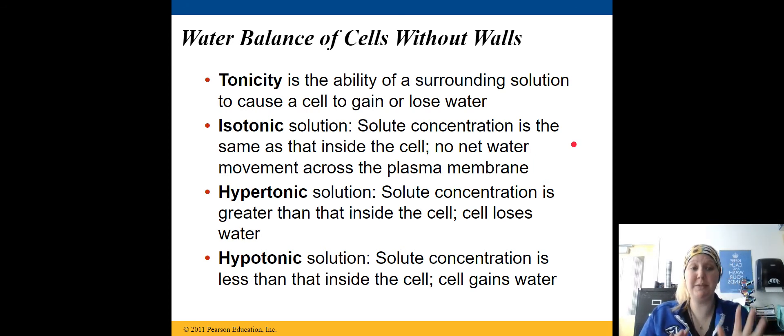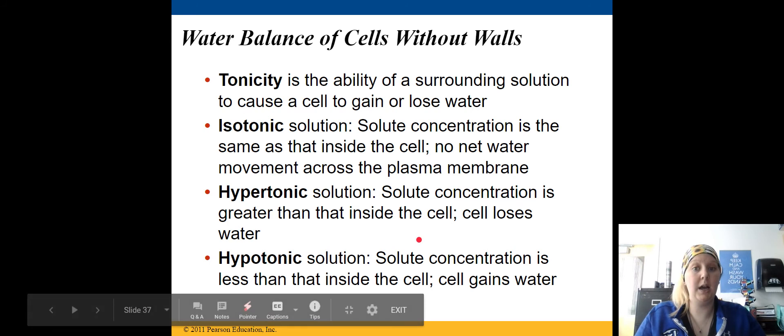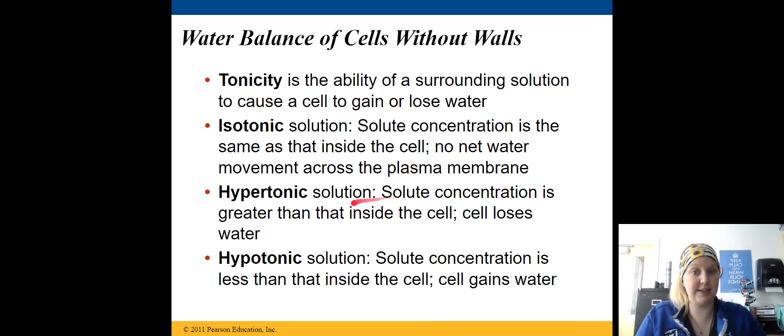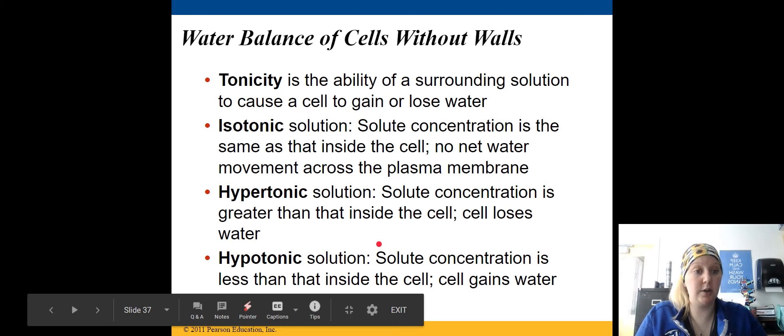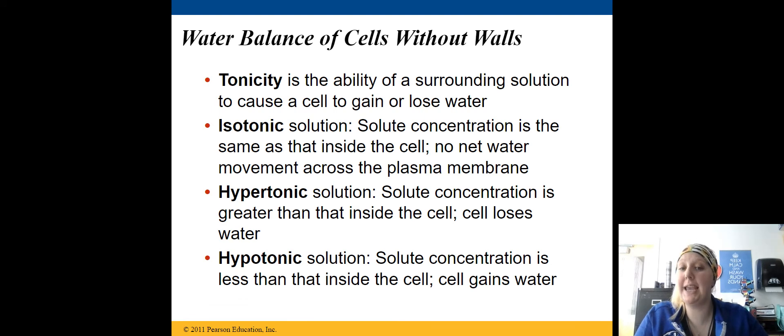Water balance is extremely important for cells that do not have cell walls. We have three main types of solutions that a cell can be in, in relation to water. The isotonic solution is a solution concentration that is the same outside and inside of the cell, meaning that there is no net gain of water, because as water moves in, water moves out. A hypertonic solution means that the solute concentration is greater outside of the cell than it is inside of the cell, and the cell loses water. In a hypotonic solution, the solute concentration is greater inside of the cell, and therefore, the cell gains water.